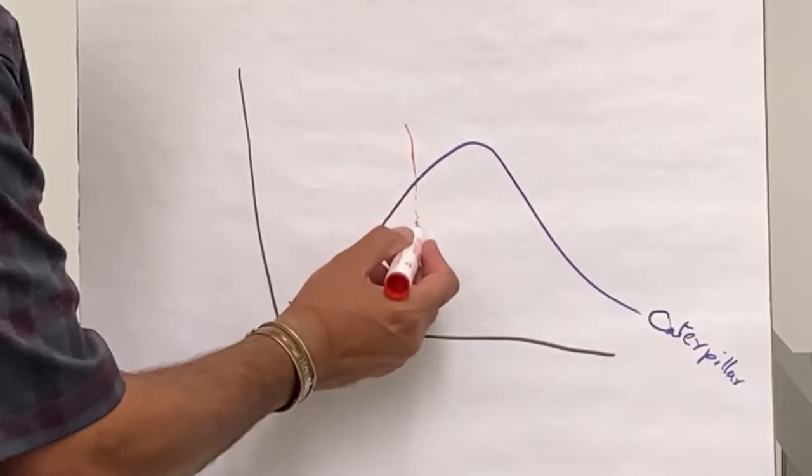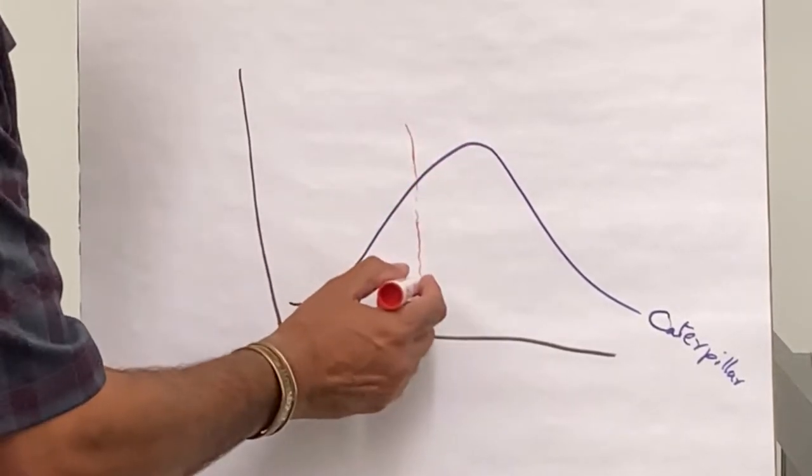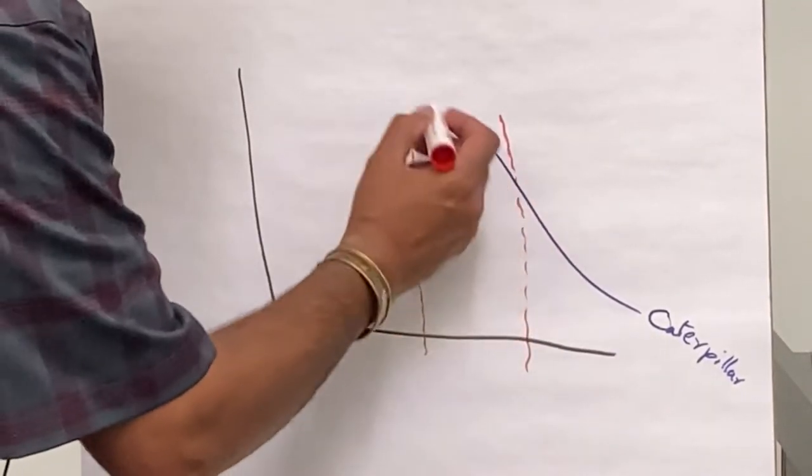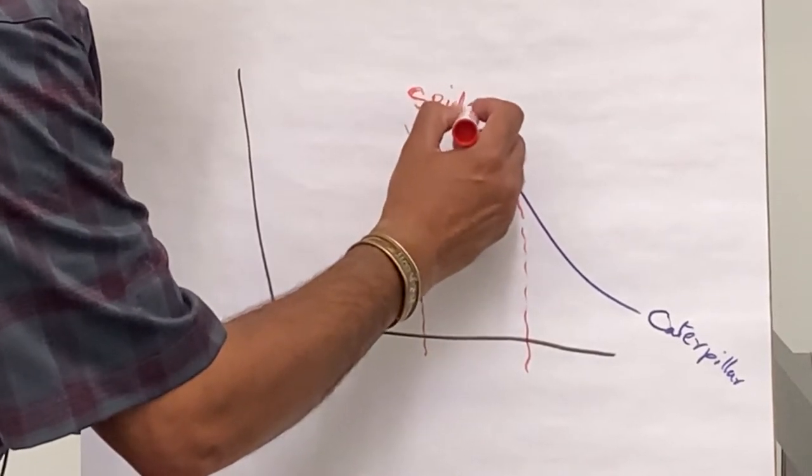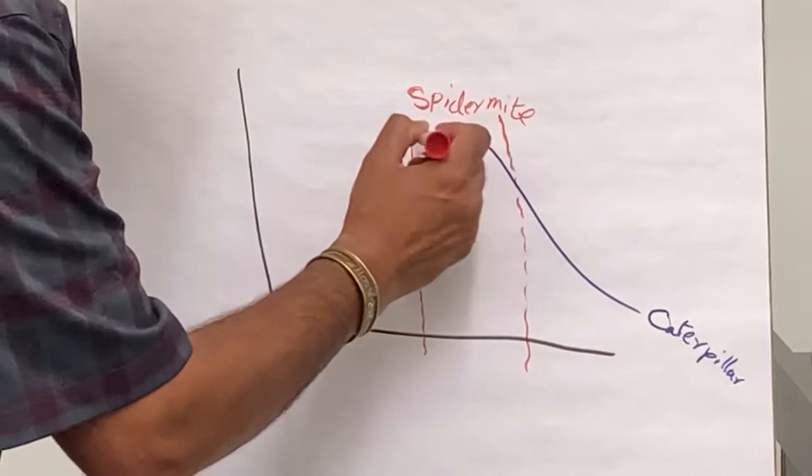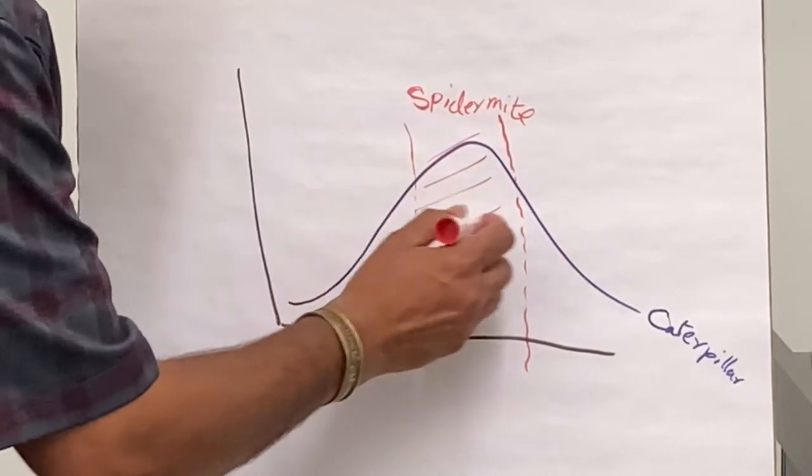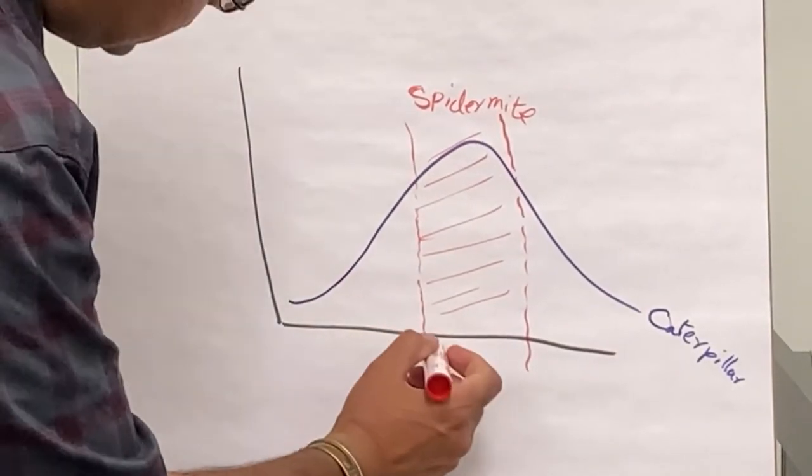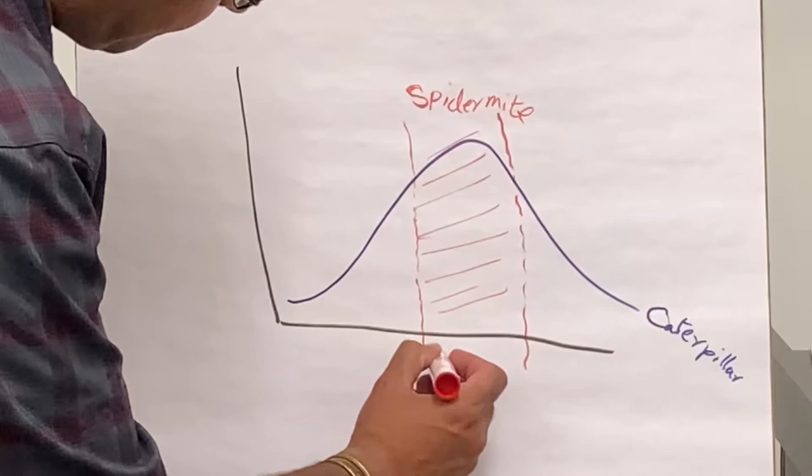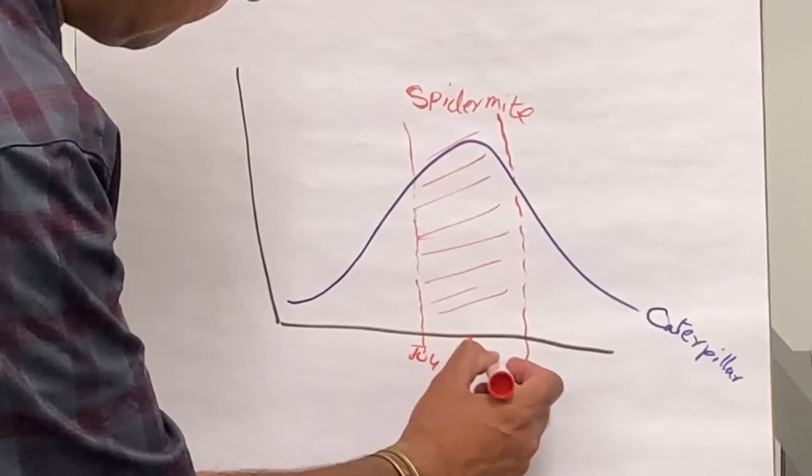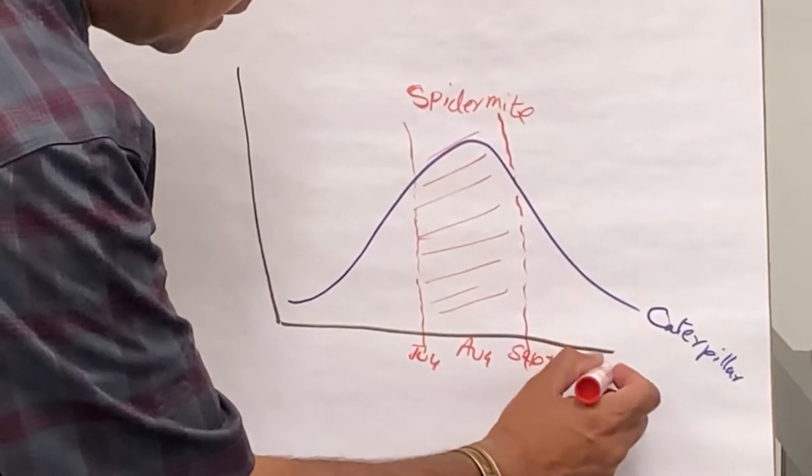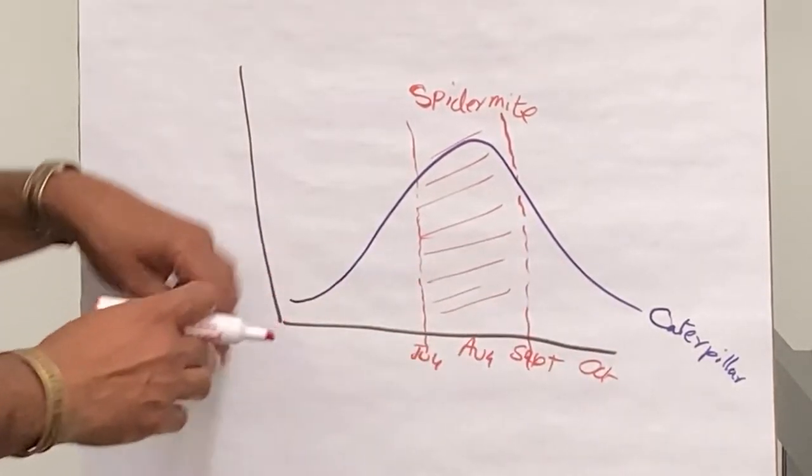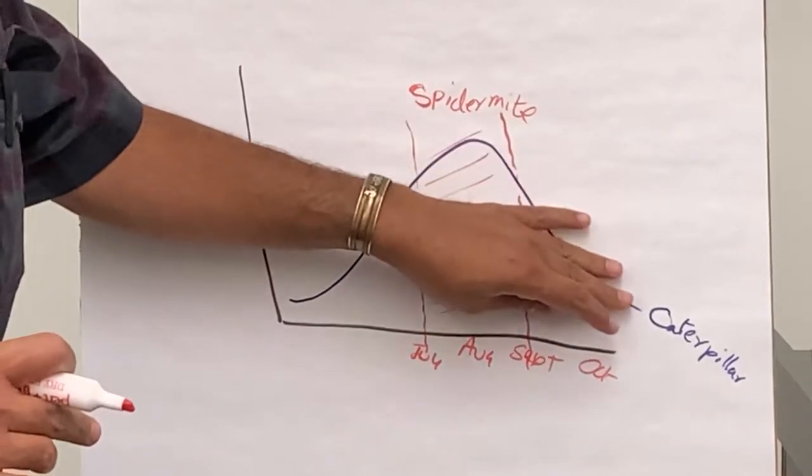This is an area where you have the caterpillars very high, but you're also at a very high risk of spider mites. So here's your spider mite risk zone. This typically happens around this time, starting in July, August, September, and then October when you might be getting ready to harvest the peanuts. That's what we see: when we mess up on our caterpillar control, you get spider mites.